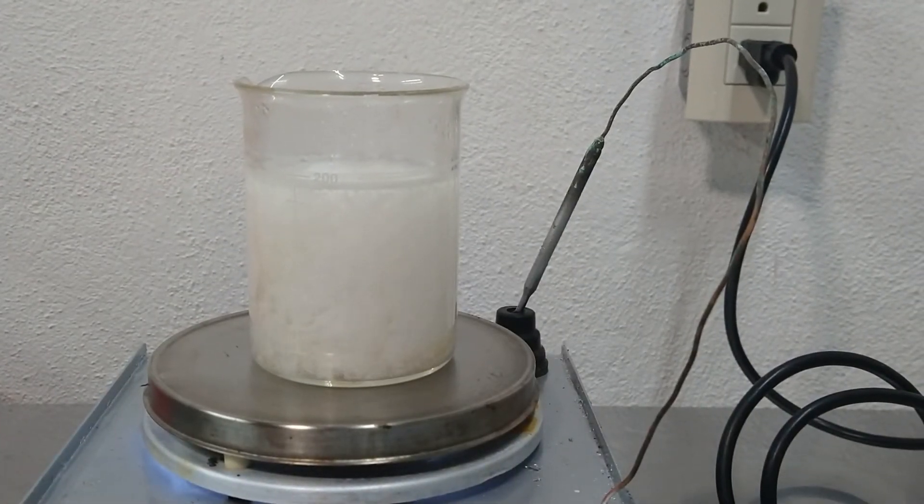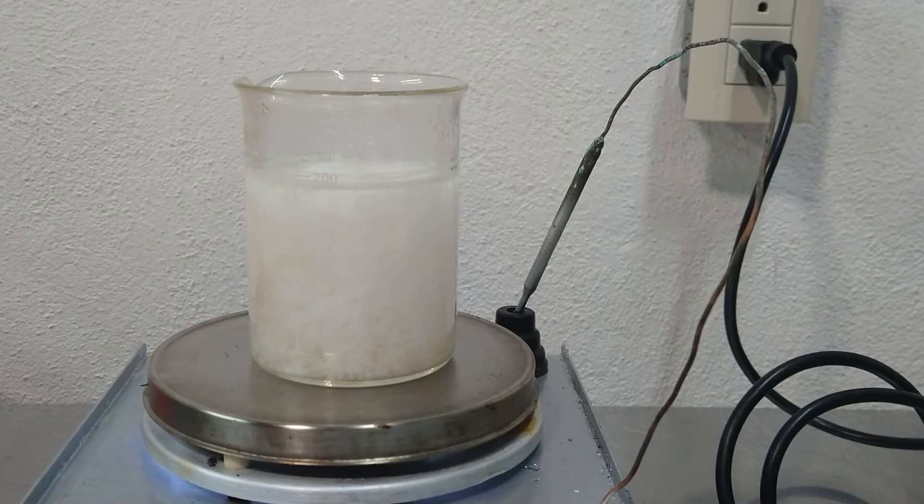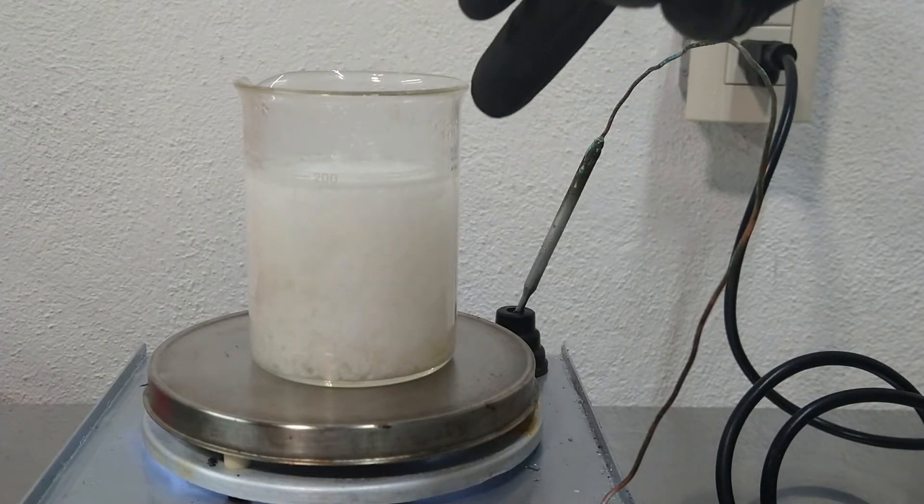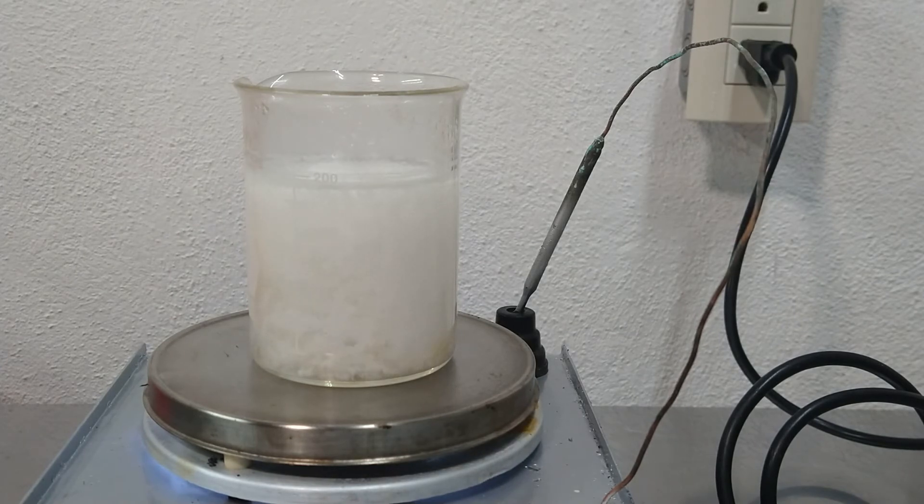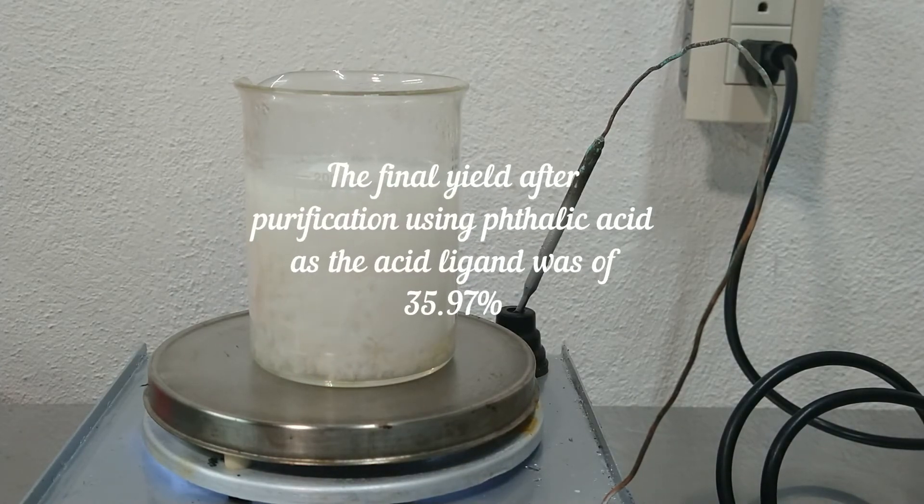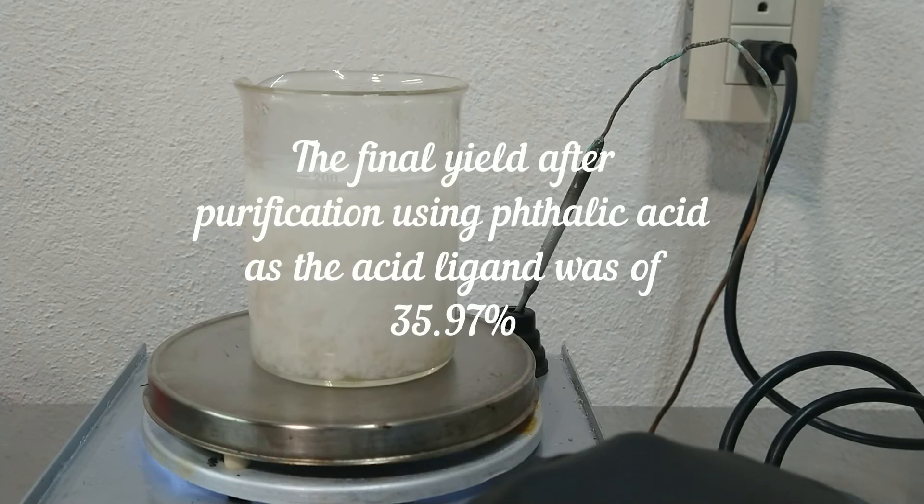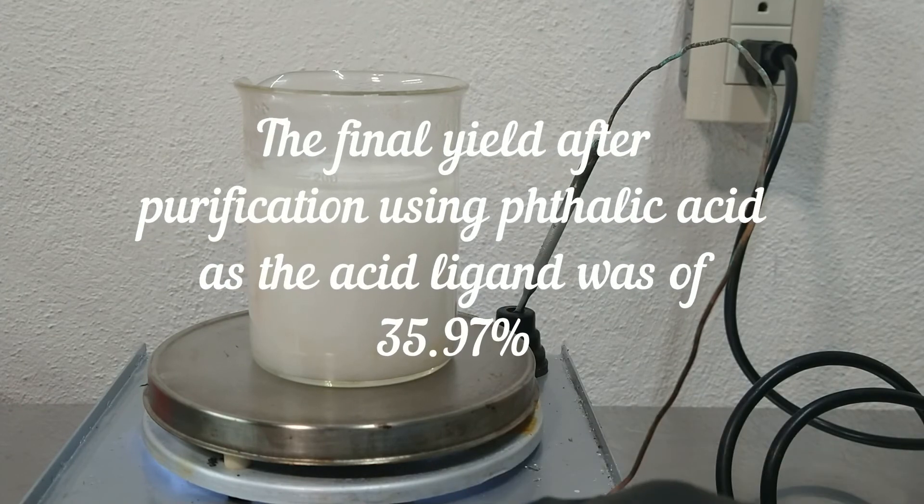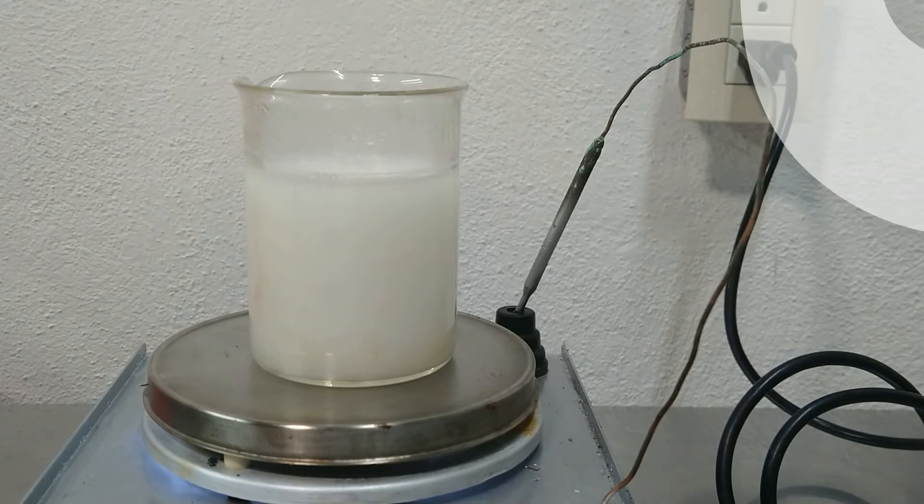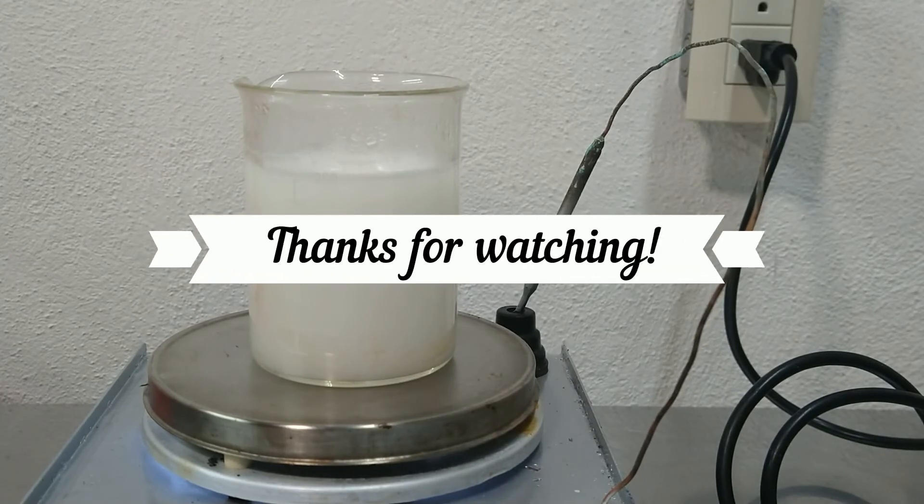And so for the last step, we need to do a recrystallization in hot water. So we add approximately 200 milliliters of distilled water and we heat to boiling and then we wait a couple of minutes until all dissolves. Then we filtrate while it is still hot and we collect the product.